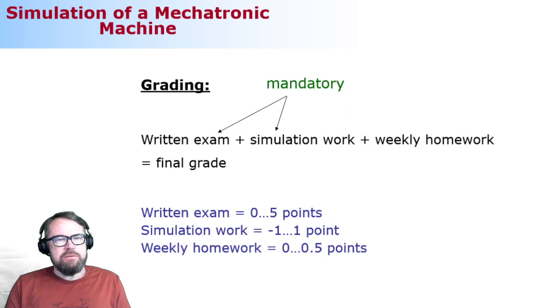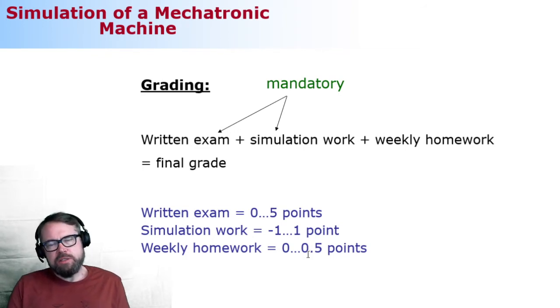As you can see, if you are doing really good work in your simulation work, it's possible that we can give you one extra point on top of your written exam. And if you really are doing all the weekly homework in an acceptable way, you can get 0.5 extra points. That means that theoretically you can get 5 here, 1 here, and 0.5 here, for a total of 6.5, which will be rounded up to 7.